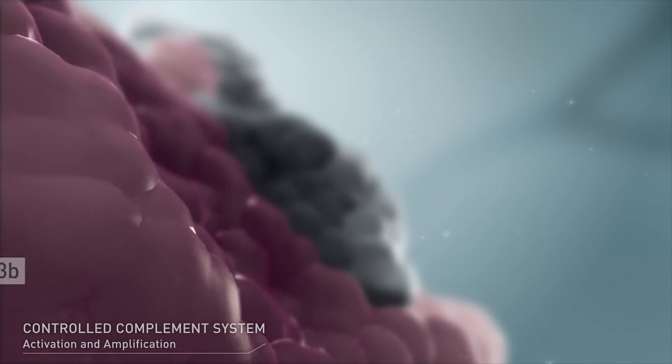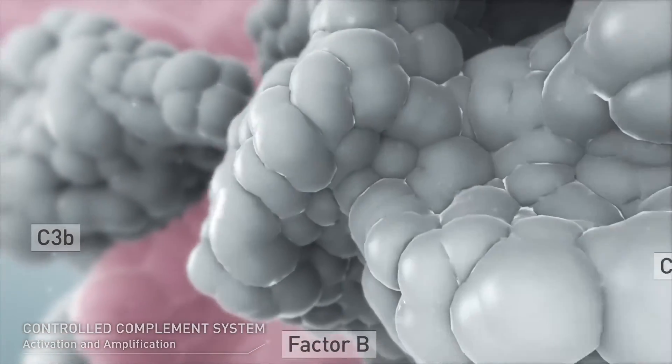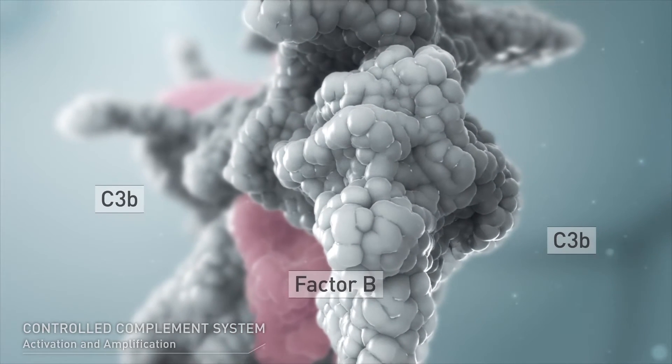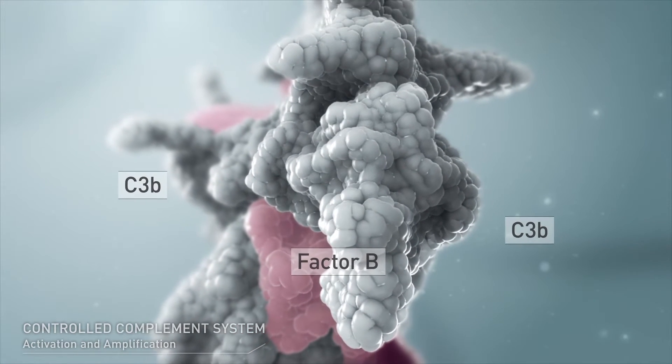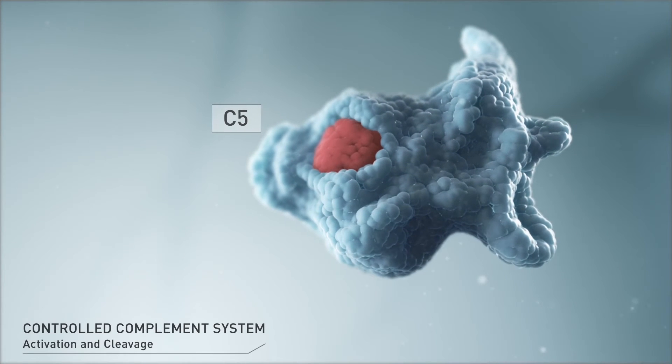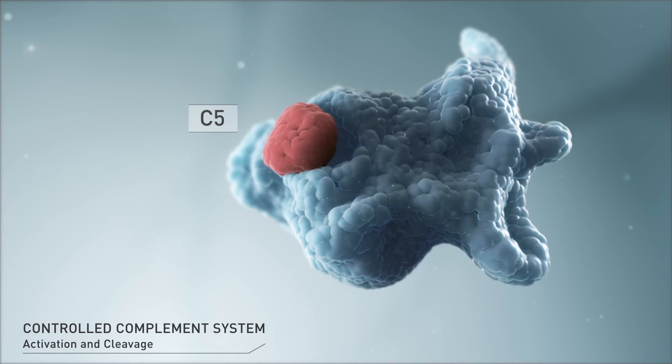Complement activation results in generation of C3A and C3B. C3B interacts with factor B to form the C5 Convertase, which is an enzyme that cleaves the terminal complement protein C5 to form C5A and C5B.